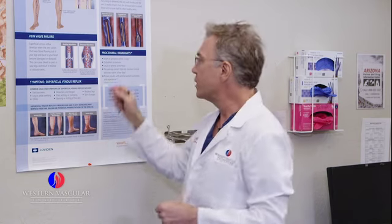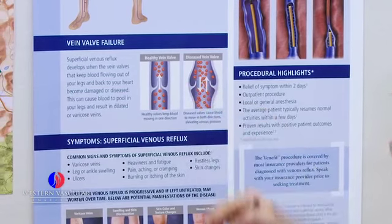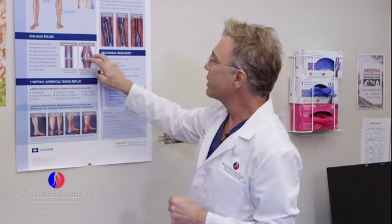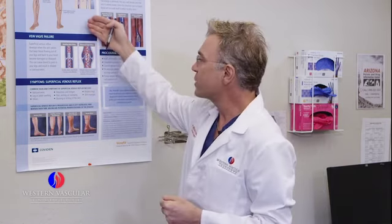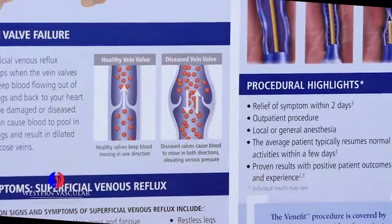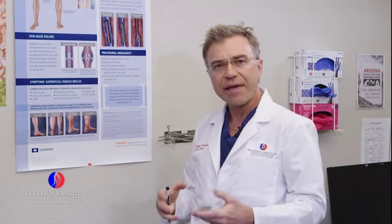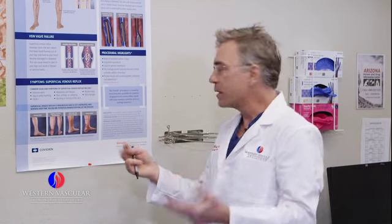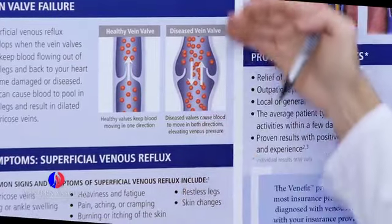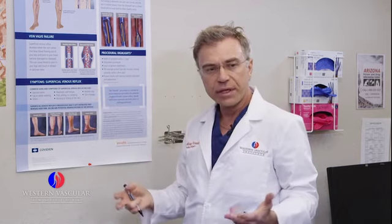What ultrasound shows us is typically dilated veins with valves that are not functioning properly — they could be bent, worn out, or the vein itself can be dilated. When we're standing and sitting, blood wants to return upward because the muscles in the legs are contracting — that's what we call the calf muscle pump. That helps return blood back up to the heart, but because the valves are not functioning, they can't close properly and blood tends to pool in the lower legs, leading to symptoms.